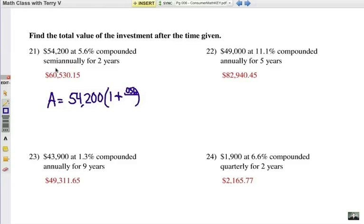Number 21. You can see your answer. And here's how we got it. You take your principal, 54,200, times 1 plus. Take your interest rate, .056. And it's semi-annually compounded. That means that you're going to divide it by 2. It gets compounded twice a year. Now, if it's compounded twice a year and you're going to invest for 2 years, then that, of course, would be 4 compoundings. So, that would be your exponent on the outside.